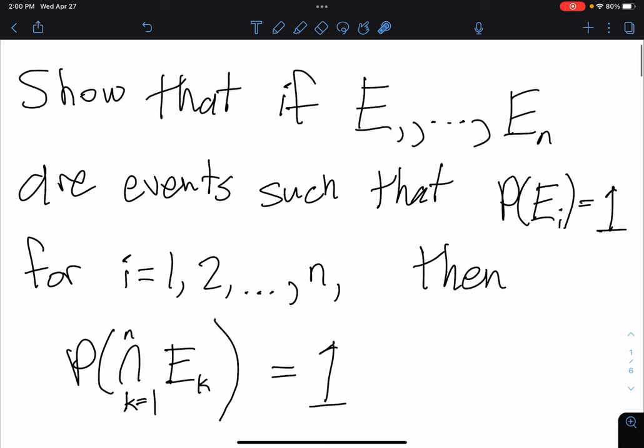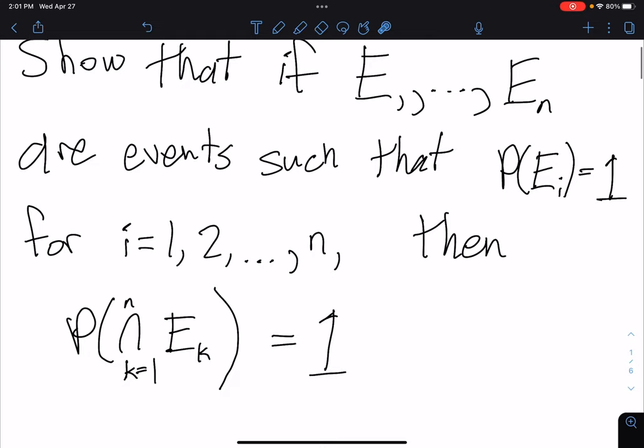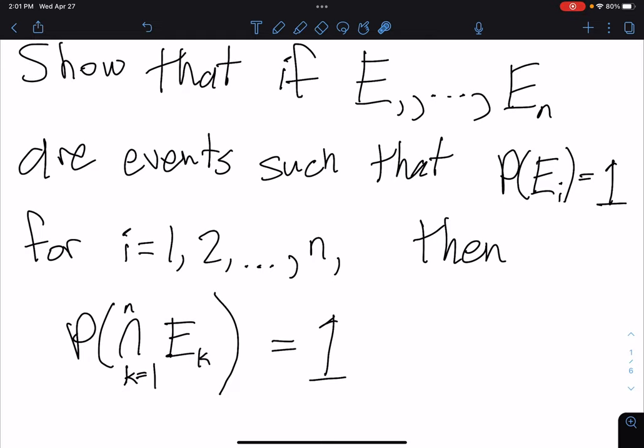It's asking us to show that if E1 up to EN are events such that probability of EI equals 1 for I equals 1 to all the way up to N, then the probability of their intersection is equal to 1.